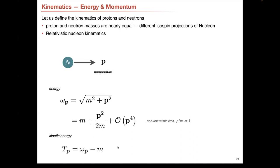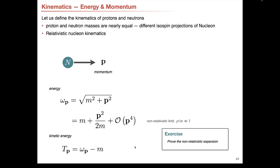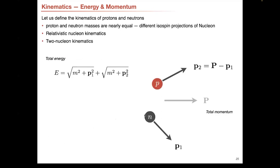We can also define the kinetic energy itself — just omega minus M. In the non-relativistic case, that's immediately the kinetic energy. If we have two nucleons together, the total energy would be just the sum of the individual nucleon energies. Often we want to trade one of the momenta for the total momentum P of the system — capital P is P1 plus P2 — so we can trade P2 for the total momentum and the momentum of particle one.